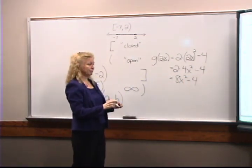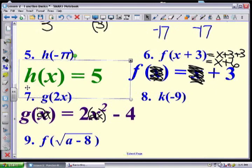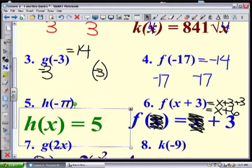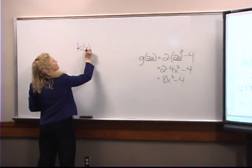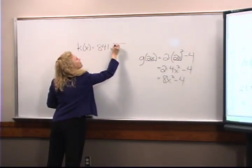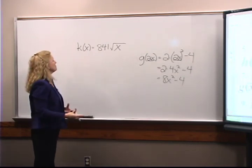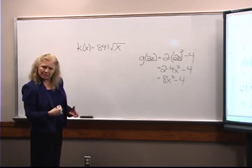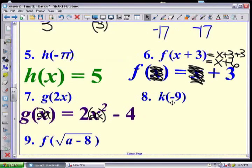For number eight, I want to do k(-9). My k function is k(x) = 841 times the square root of x. You can see how having named functions is handy — when asked to evaluate, I simply go looking for the function. My input is supposed to be negative 9, so k(-9) = 841 times the square root of negative 9. And then you realize — there's a problem.